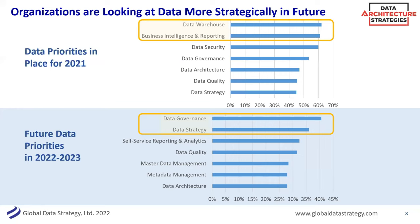When looking at 2021 priorities, BI and data warehousing always rise to the top. Number one was data warehouse and business intelligence. Unfortunately I see too many companies doing the BI side but not the warehouse or the hard work behind it. But when you look towards future priorities for 2022 and beyond, what's bubbling to the top is data governance and data strategy. Using our own practice as a litmus test, governance and strategy are among our biggest drivers from customers, along with master data management.